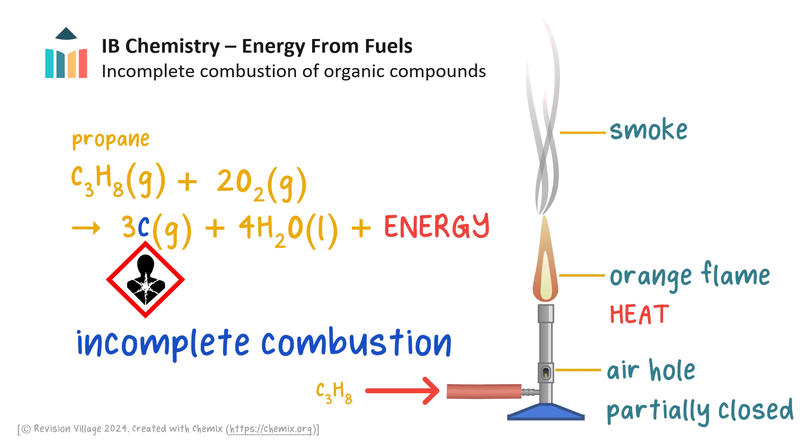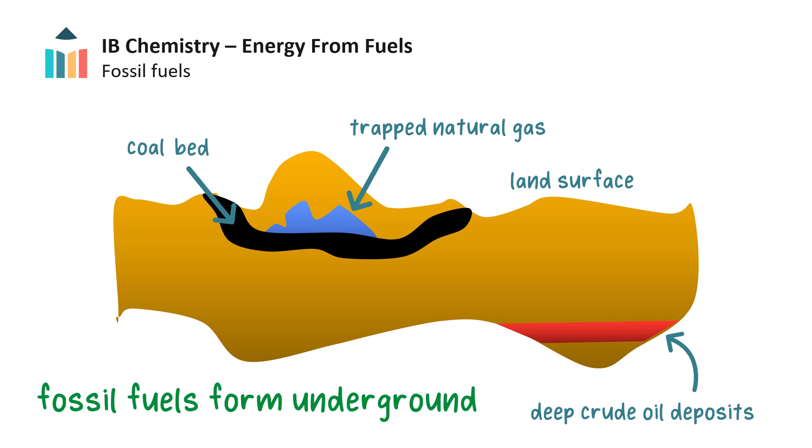The incomplete combustion of ethanol would also produce either carbon monoxide or carbon and water. Alkanes and alcohols are two types of the many organic compounds which come from fossil fuels. Fossil fuels include natural gas, crude oil, and coal.